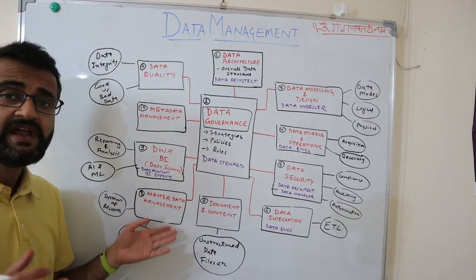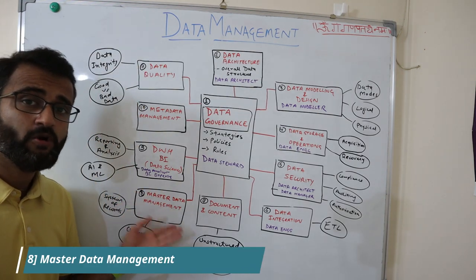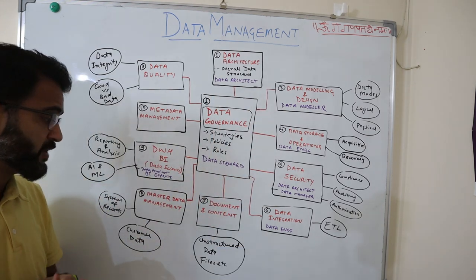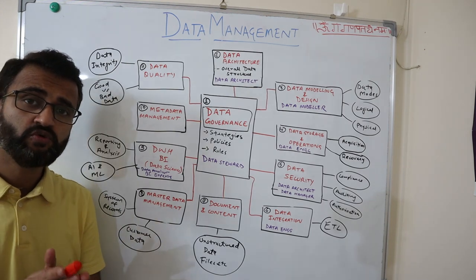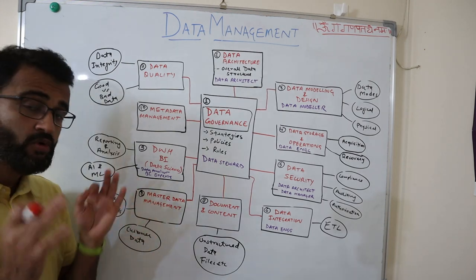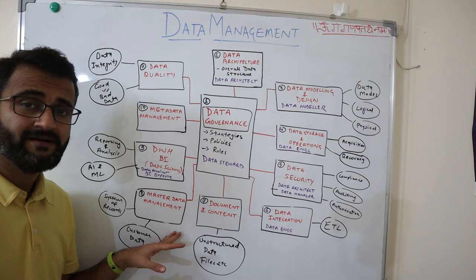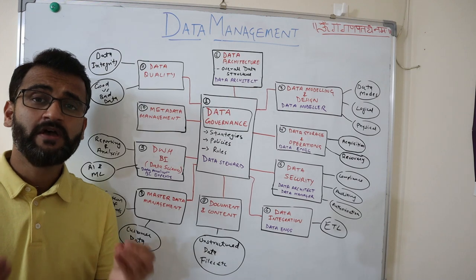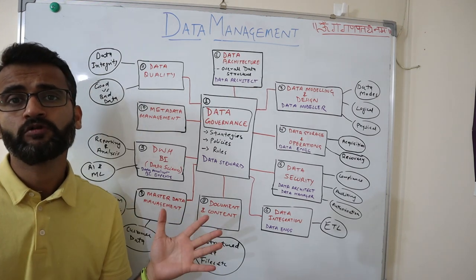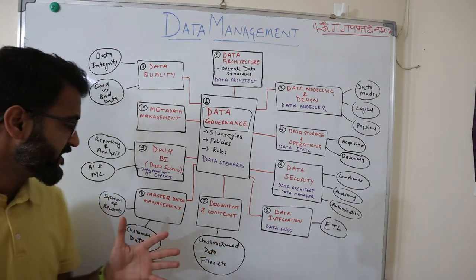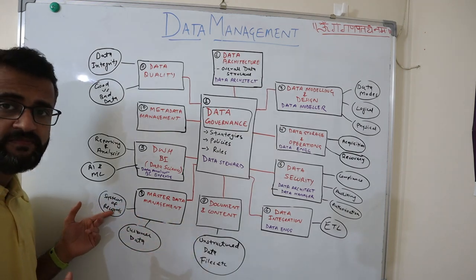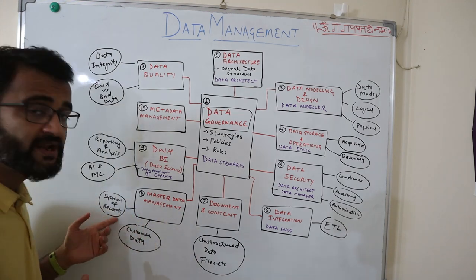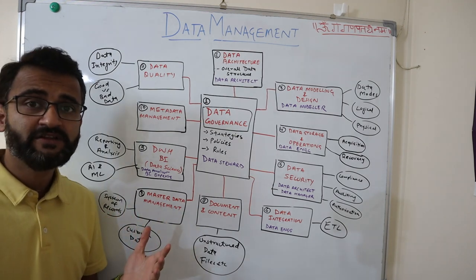The eighth area is master data management, which is very important within the overall data management framework. Master data management ensures that you are managing and maintaining the quality of your master data. Master data refers to the dimensions or entities that define all of your business processes — your system of records, how data comes into the system, and what entities it connects with.